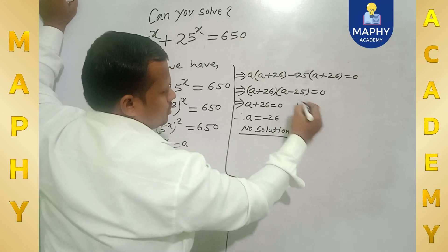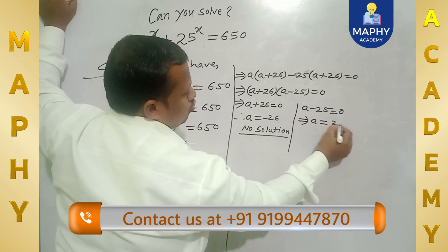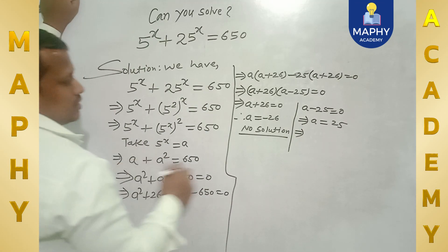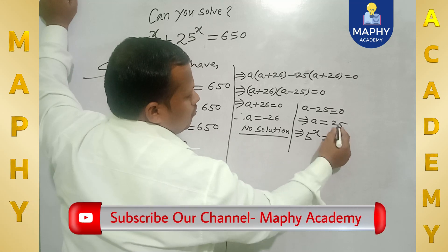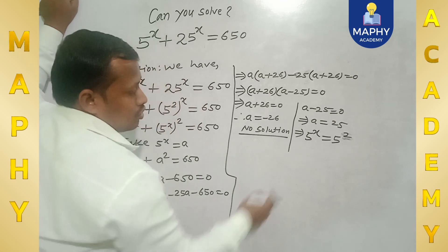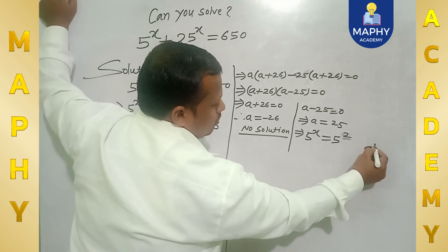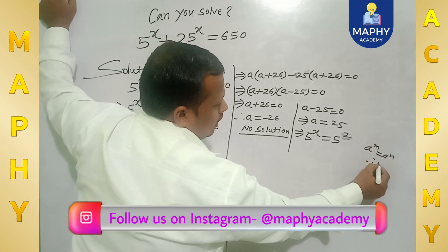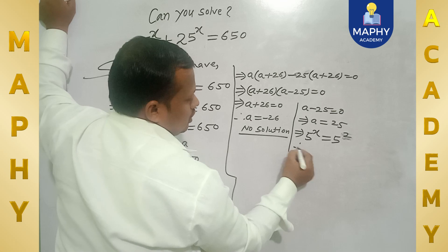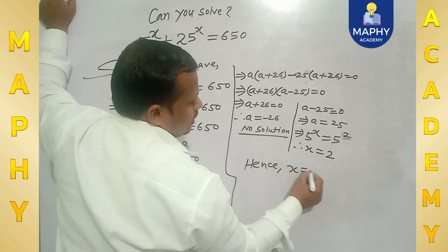Taking a minus 25 equals 0 gives a equals 25. Since we defined a as 5 to the power x, and 25 can be written as 5 to the power 2, we can equate the exponents using the rule: if a to the power m equals a to the power n, then m equals n. Therefore x equals 2. Hence the required answer is x equals 2.